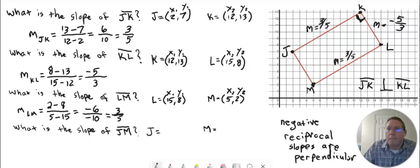The slope of LM is 3 fifths, which is the same as JK — also 3 fifths. And since KL is negative 5 thirds, which is the negative reciprocal of 3 fifths, that means there's a 90-degree angle, and JK is parallel to LM.